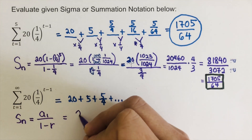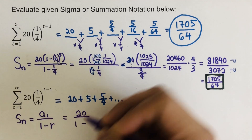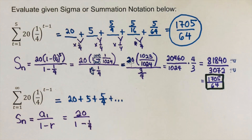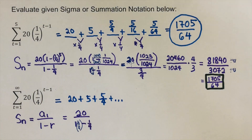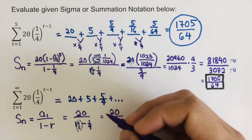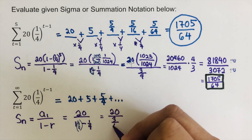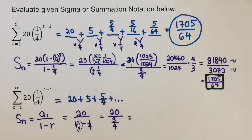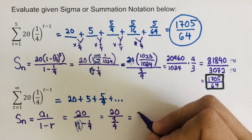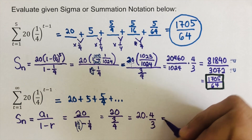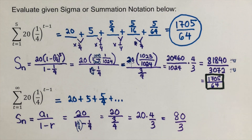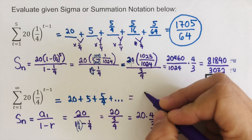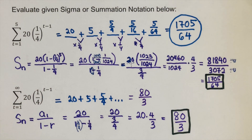In this case, A sub one is 20, divided by (1 minus one fourth). Since they don't have the same denominators, we multiply by four over four. Our equation comes out to 20 times four over three. So 20 times four is 80 over three — and this is our sum for this infinite geometric series. Our answer is 80/3.